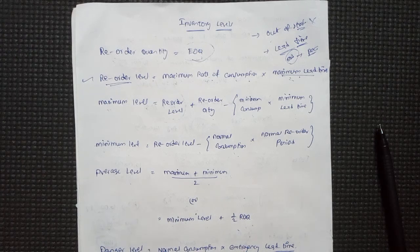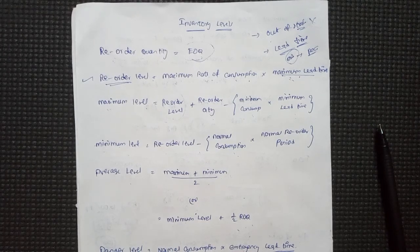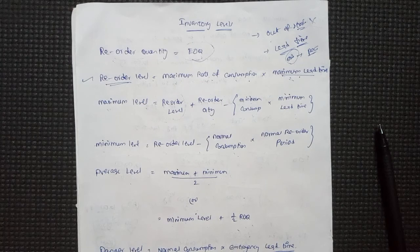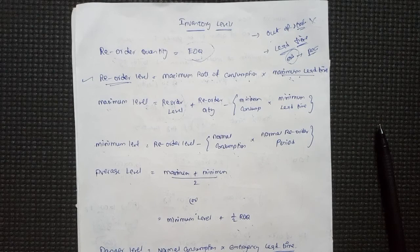Ok guys, let's talk about the last video. If you want to add the reorder quantity, you can see how much you have as a consumption requirement. If you want to purchase any quantity, there will be less cost. Now, let's talk about the levels of stock.